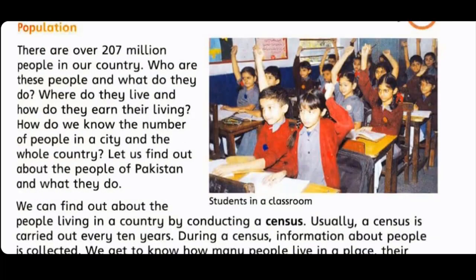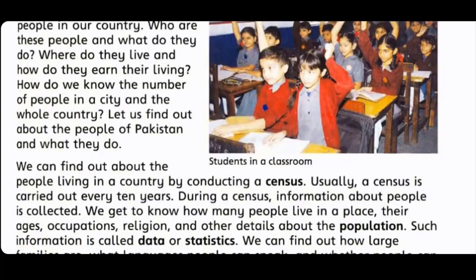We can find out about people living in a country by conducting a census. Usually a census is carried out every 10 years. During a census, information about people is collected. We get to know how many people live in a place, their ages, occupation, religion and other details about the population. Such information is called data or statistics.